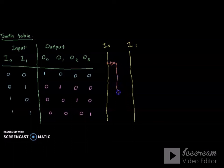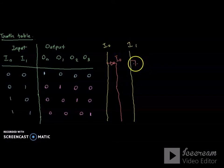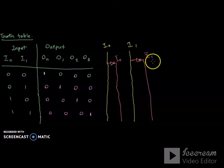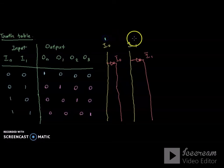I0 complement and I1 complement — we are going to use NOT gates to implement them. This is the NOT gate, giving I1 bar. I0 represents 1, I1 represents 1, and their complements: I0 bar represents 0 and I1 bar represents 0.